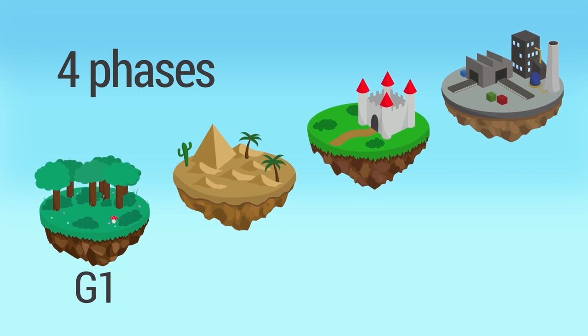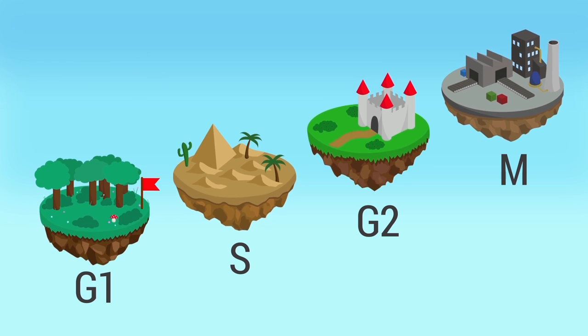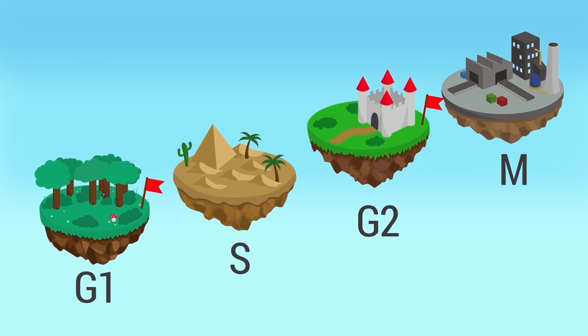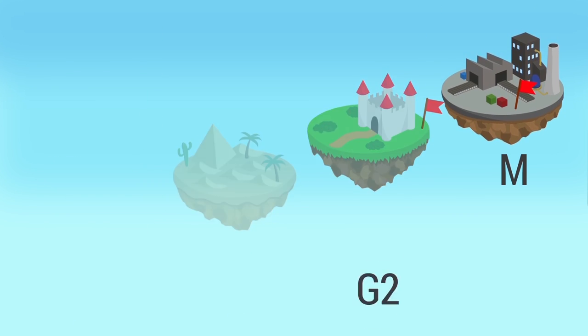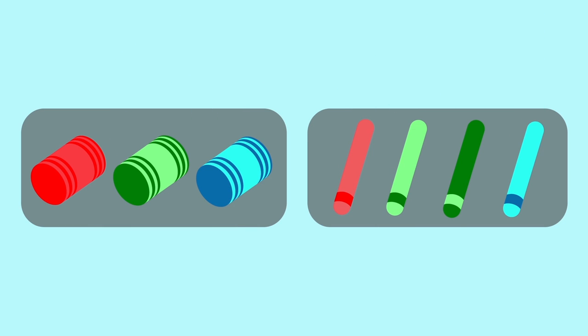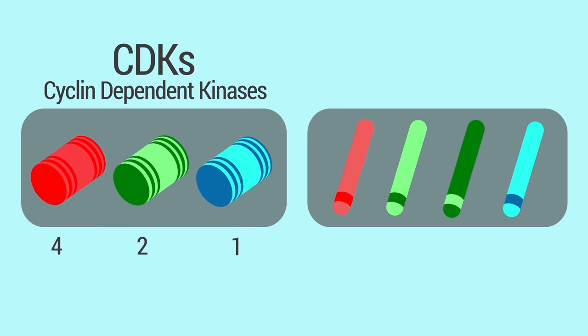There are four phases in the cycle: G1, S, G2, and M. The cell cycle is closely regulated at three checkpoints. Simply put, progression through these checkpoints requires activation of a number of cyclin-dependent kinases, or CDKs, by their binding partners, the cyclins.